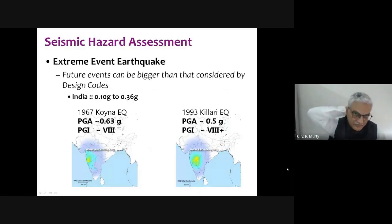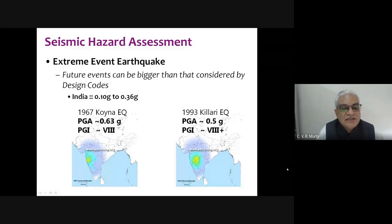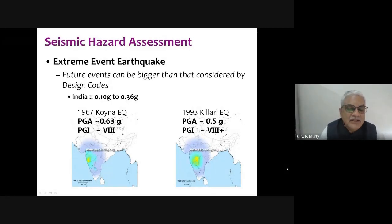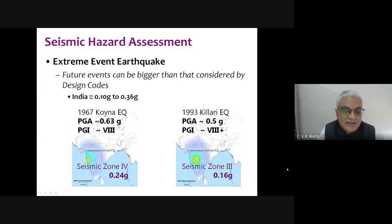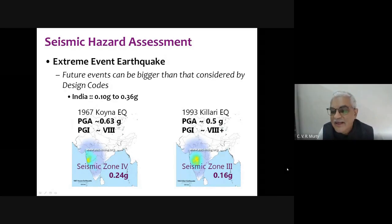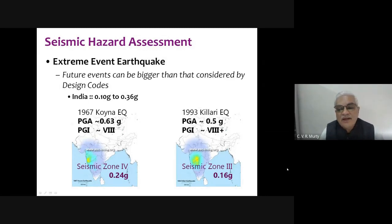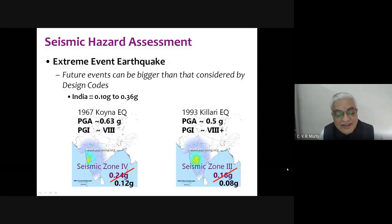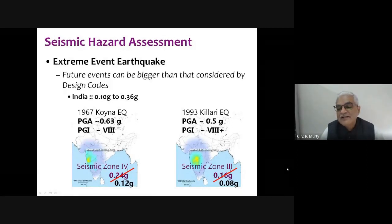The peak ground acceleration in the Koyna earthquake 1967 was estimated at 0.63g, and in the Killari earthquake around 0.5g, with recorded intensities of VIII and VIII+. Yet India placed these in Seismic Zone IV with a design PGA of 0.24g — approximately one-third of the real-world values. We are underestimating acceleration by a large margin, especially for surprise events likely to be very large earthquakes. We then further reduce that underestimated PGA by another factor, compounding the problem.